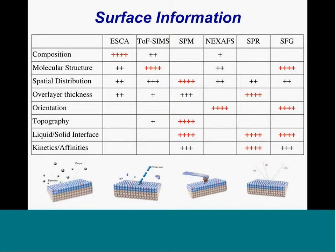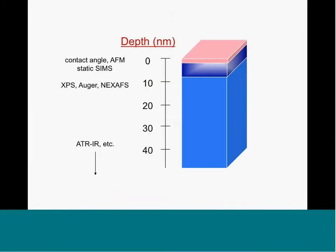As we have more tools at our disposal, it's really important to realize each tool has its strengths and weaknesses. XPS or ESCA is great at doing composition on a wide range of materials, but not so good at getting molecular information. Techniques like mass spectrometry-based ToF-SIMS are typically better for that. Other techniques work directly at the liquid-solid interface, like scanning probes, SPR, and SFG. There's no one magic technique that gives us all the information we need—we need to think about this in terms of problem solving.